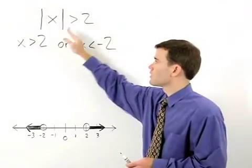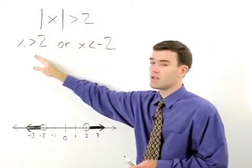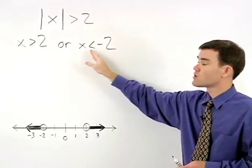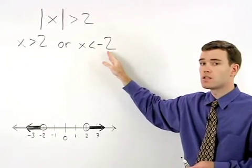Our first inequality will look just like the original problem, minus the absolute value signs. In our second inequality, we must switch the direction of the inequality sign and make the right side negative.